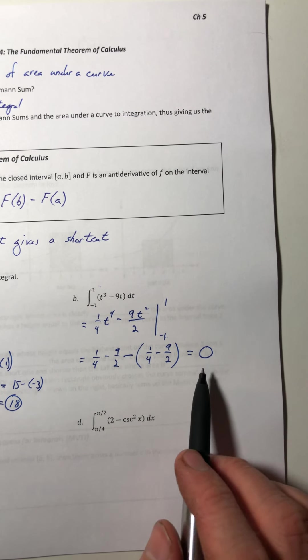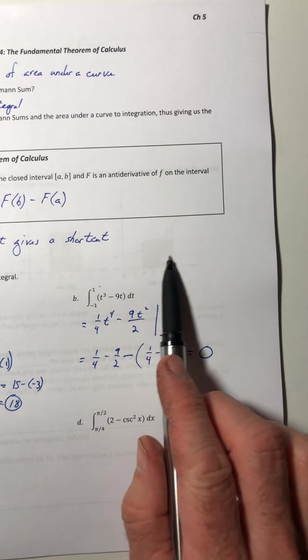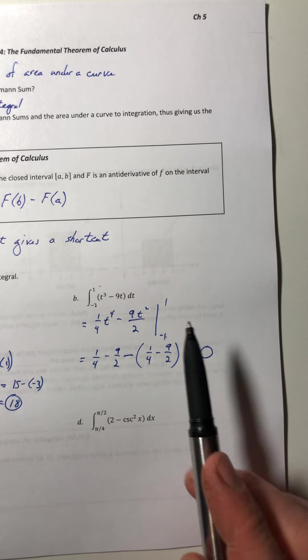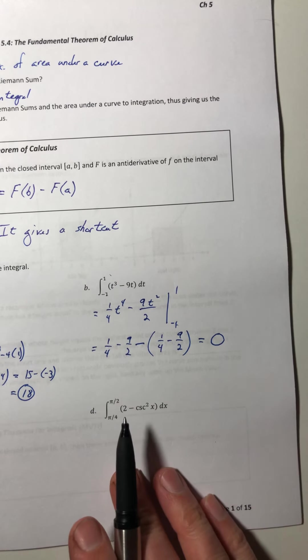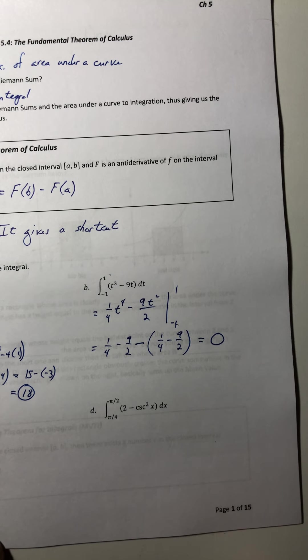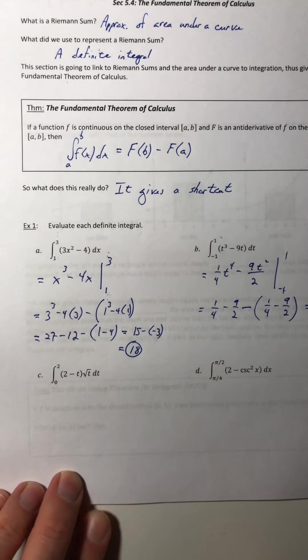So what do you think that means if you get a 0? Well, that kind of means that you have equal areas on top and underneath the x-axis and they canceled each other out. Kind of nifty, huh?